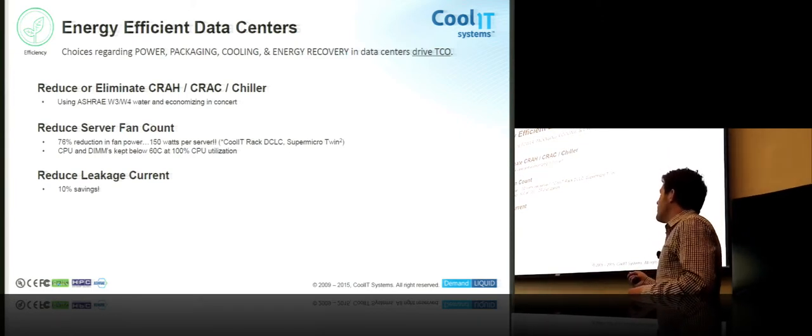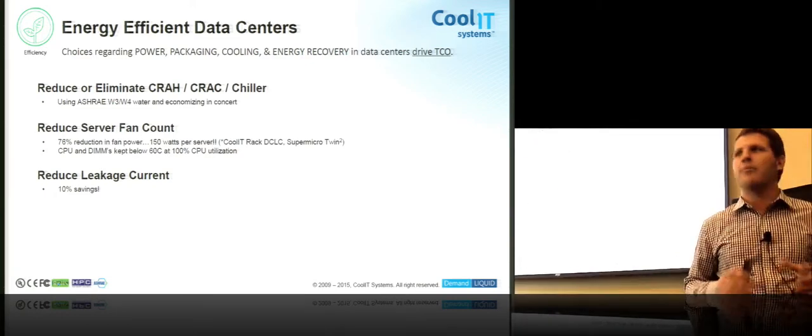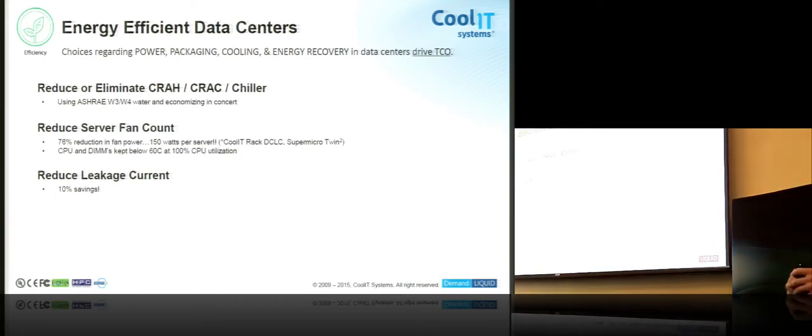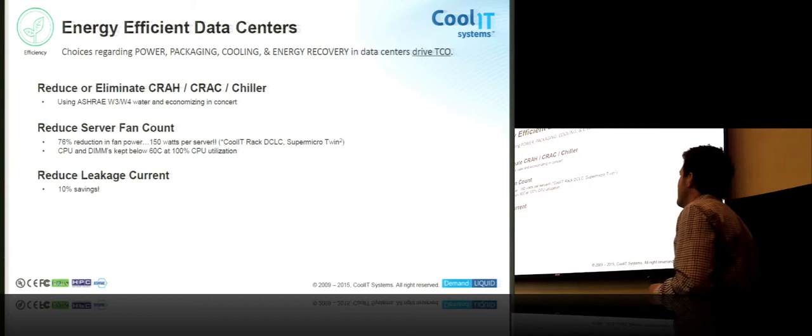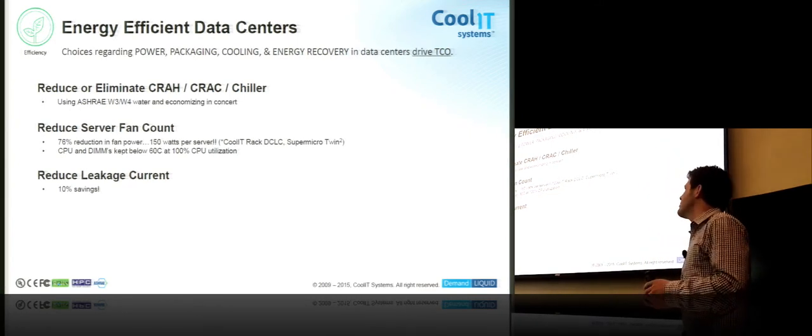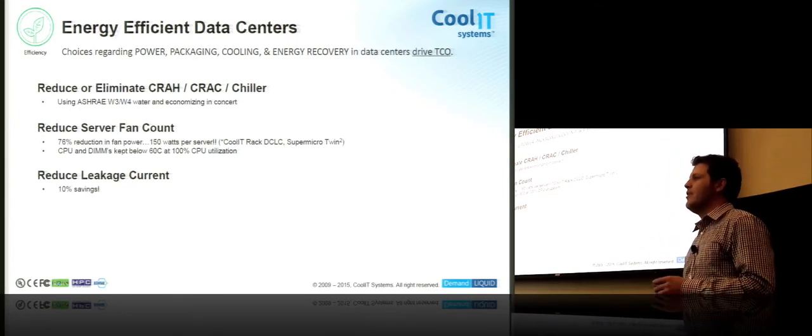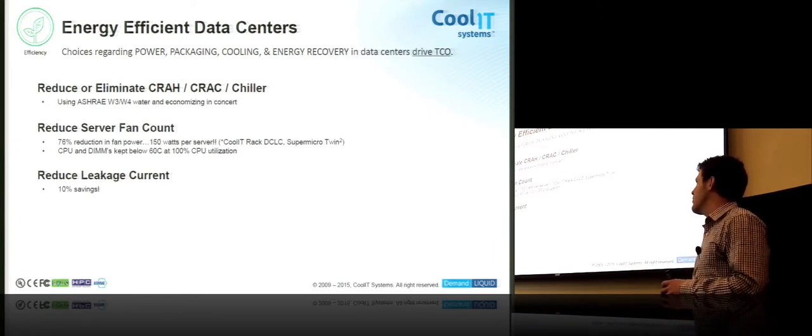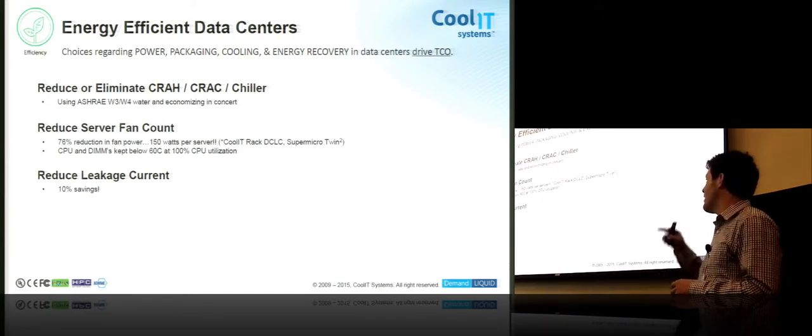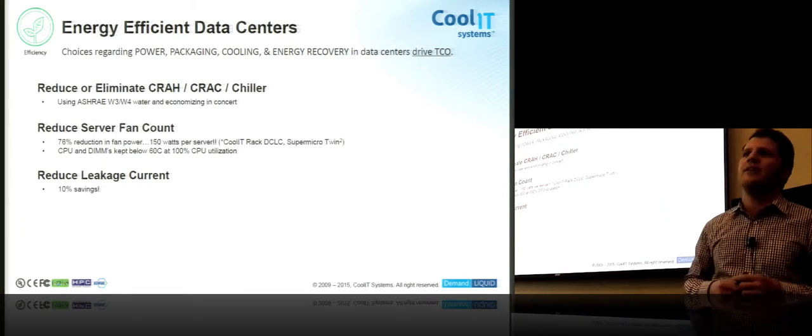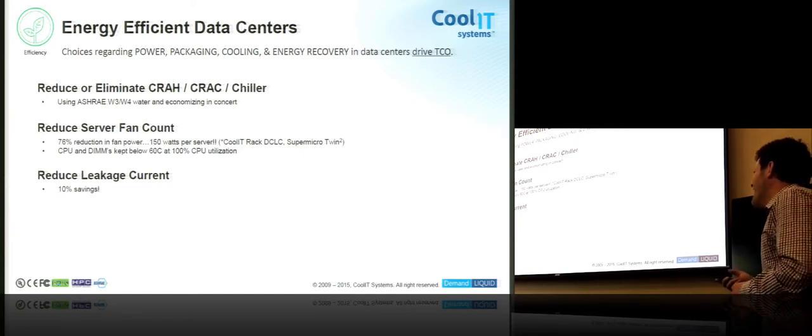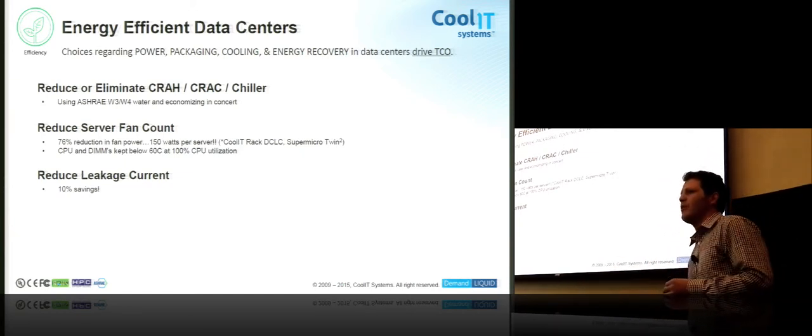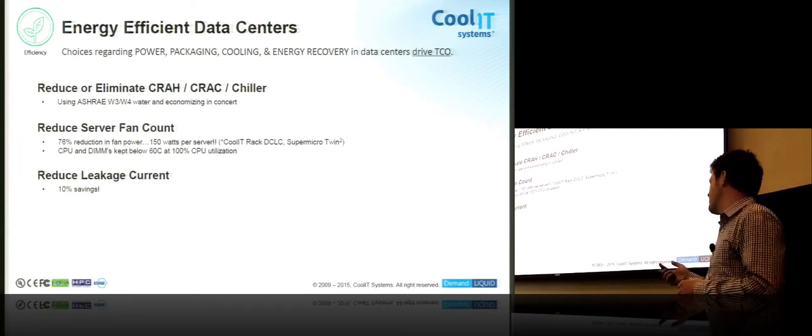In the server level, we also talk about efficiency. We can reduce the fan power, the total fan power consumption inside the server. We recently did a with Supermicro on their twin squared unit server. And we saw that we had a 76% reduction in fan power. So a total of 150 watts saved at each server. And that kept, that was at 100% CPU utilization. It kept the DIMMs and the CPU below 60C.